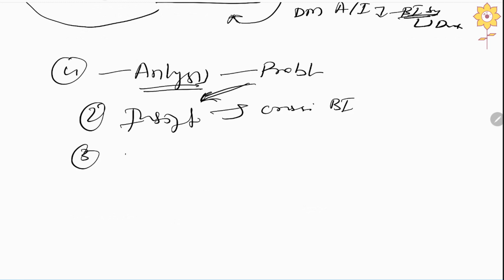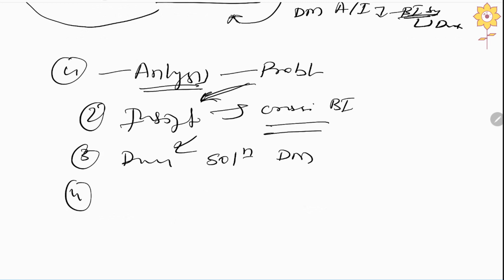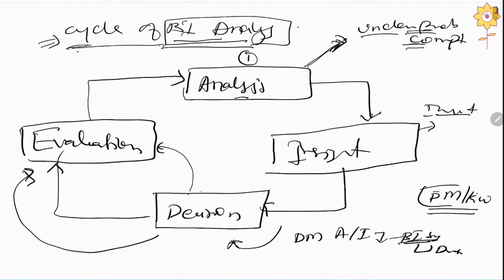Then comes the decision phase, where different sorts of solutions are provided by the decision maker. Lastly is the evaluation phase — whatever solution is given is applied to the business and we see whether it is effective or not. If the solution is effective, the cycle stops. If not, the cycle takes another round, analyzing the problem from a different point of view and coming up with a different solution to evaluate again.